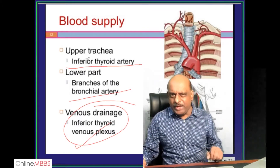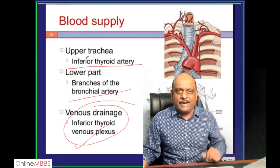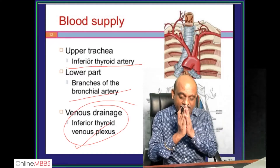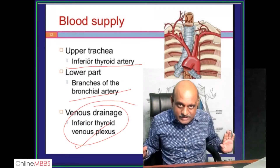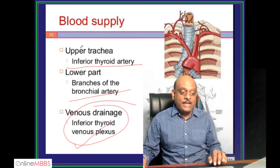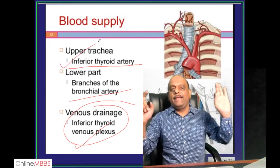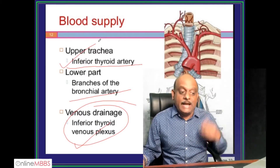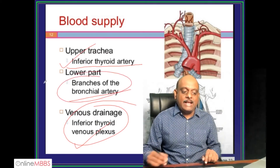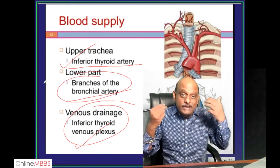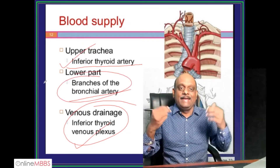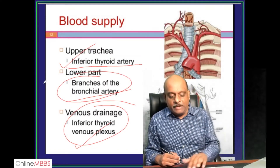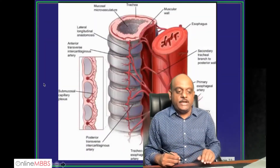There is no separate tracheal artery or superior tracheal artery - there are no such things. The inferior thyroid artery is the main blood supply for the upper part of the trachea, and the branches of the bronchial artery are the main supply for the lower part. That is what you need to remember.